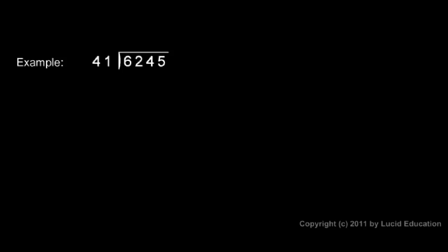Here's another example. 6245 divided by 41. Let's look at the 41 and the 62. And a quick rounding. Instead of 41, think of this as 40 and this is 60. And you can tell that 40 will go into 60 one time. I'll go ahead and write that. 40 goes into 60 one time.